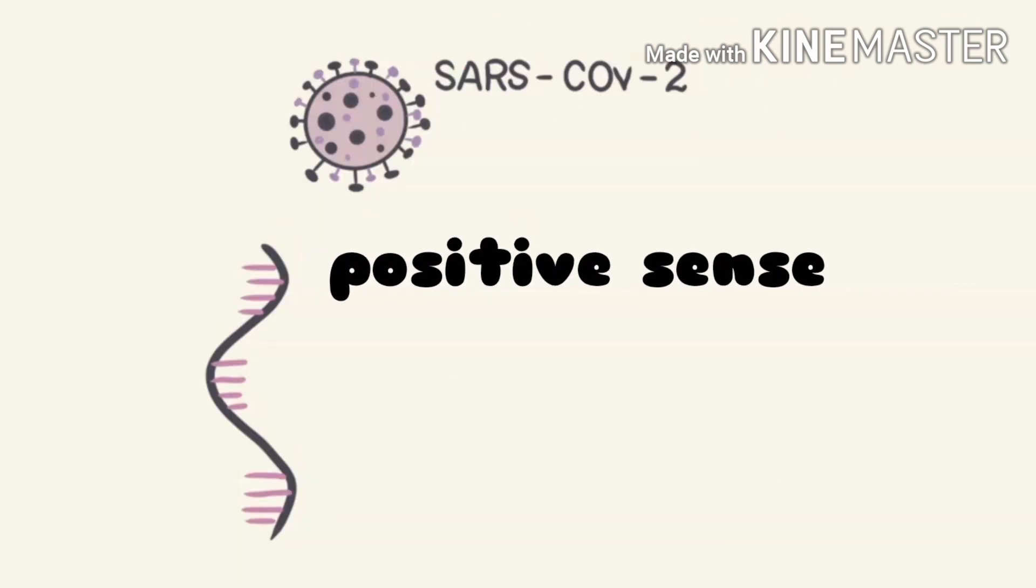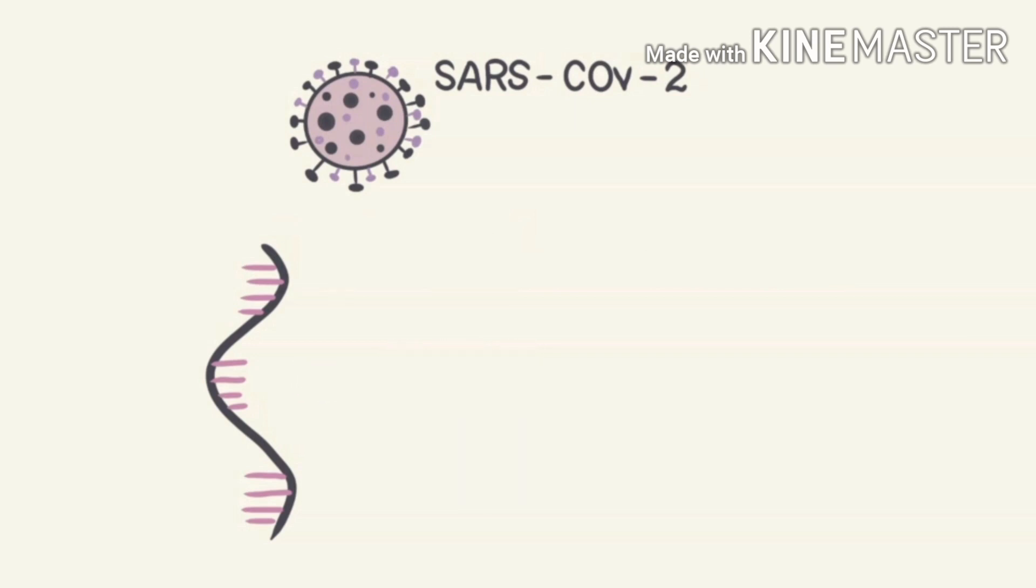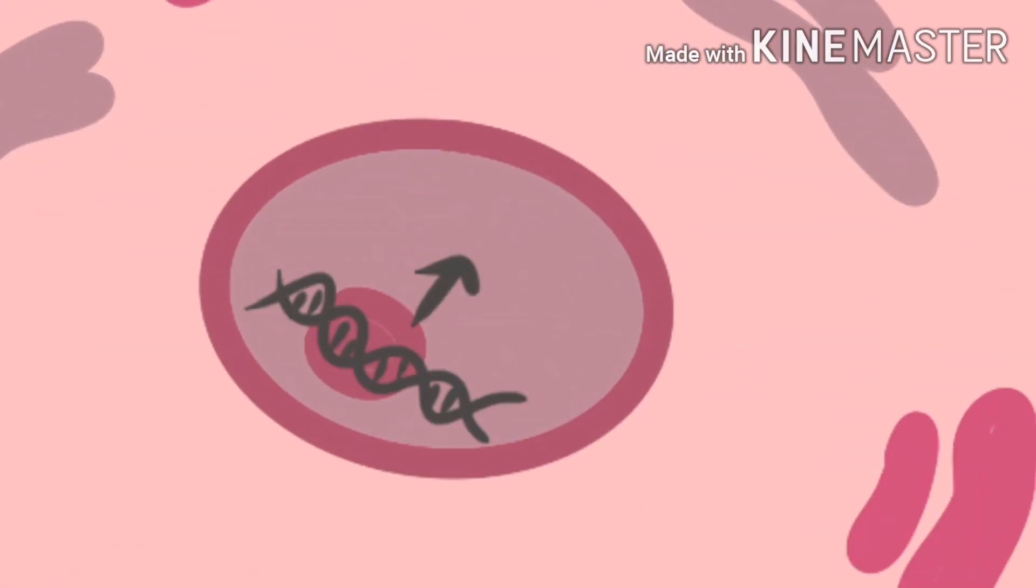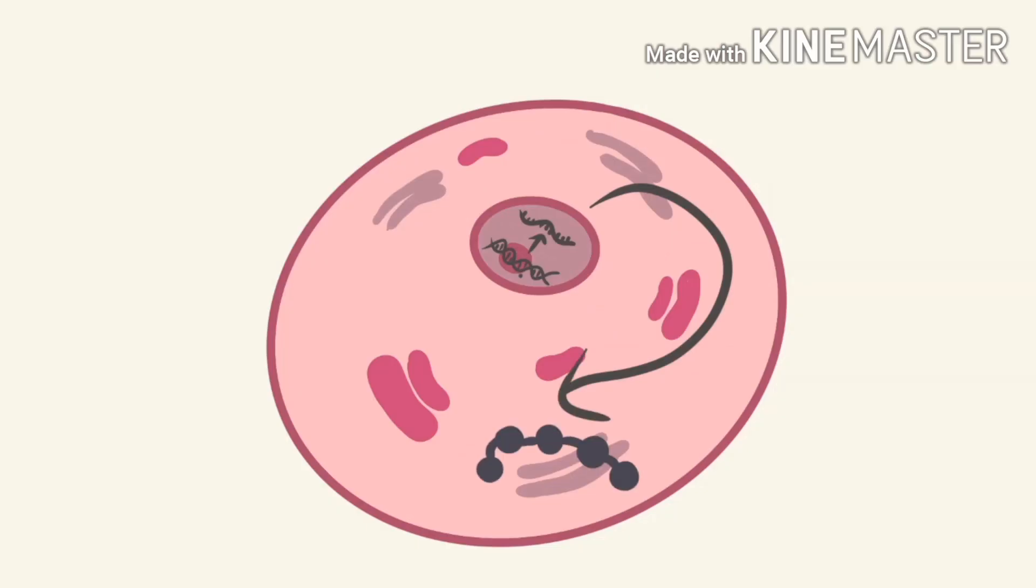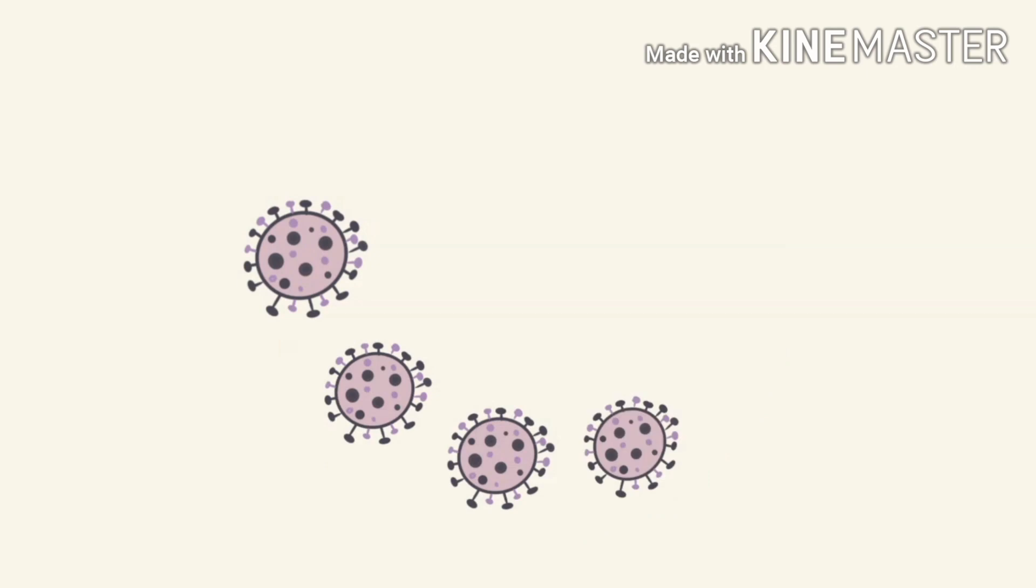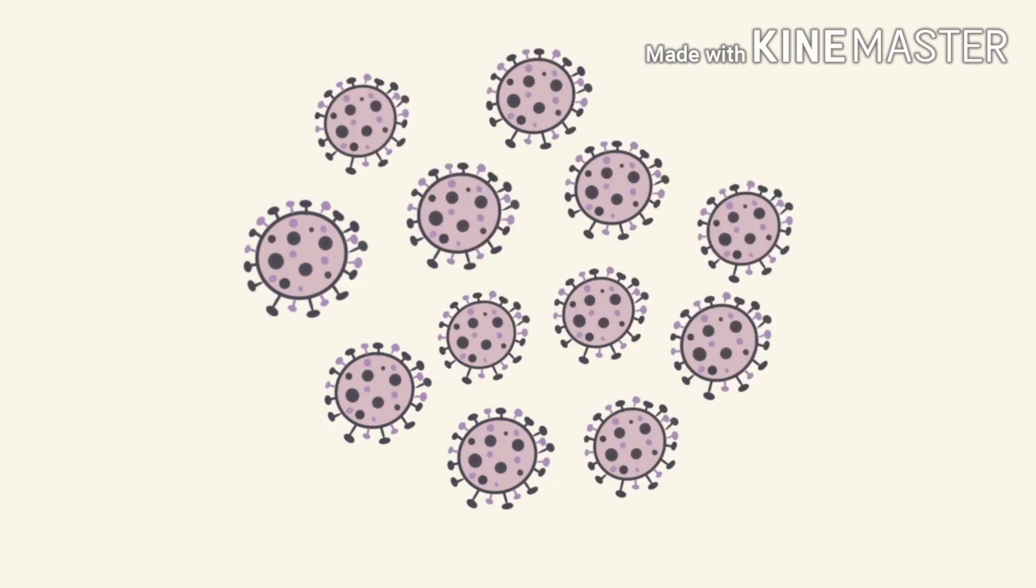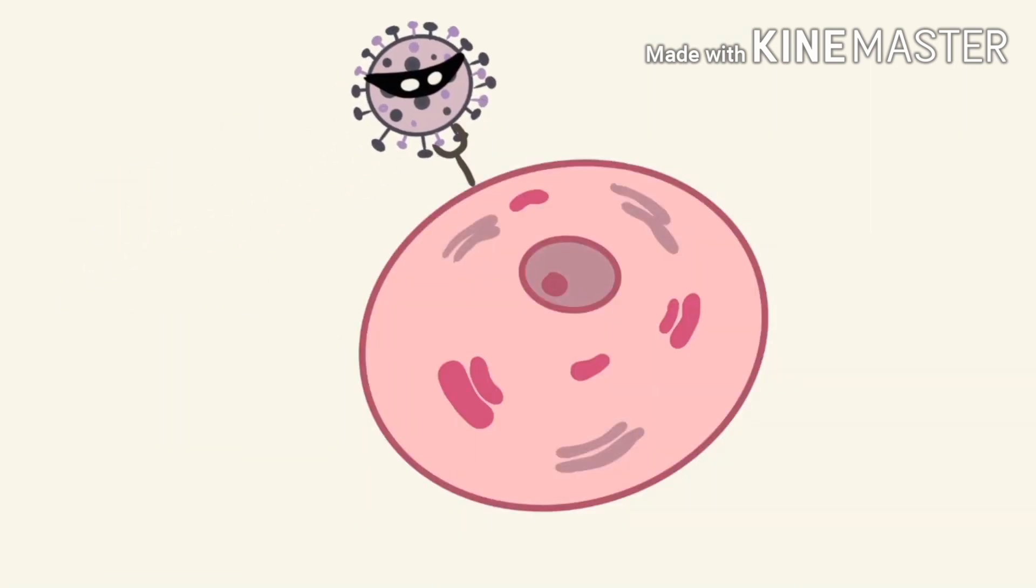DNA is copied in the form of messenger RNA. The messenger RNA goes out of the nucleus through the nuclear pores and gets translated in the form of proteins. The viral proteins get assembled to form these tiny baby viruses, which then hijack other host cells.